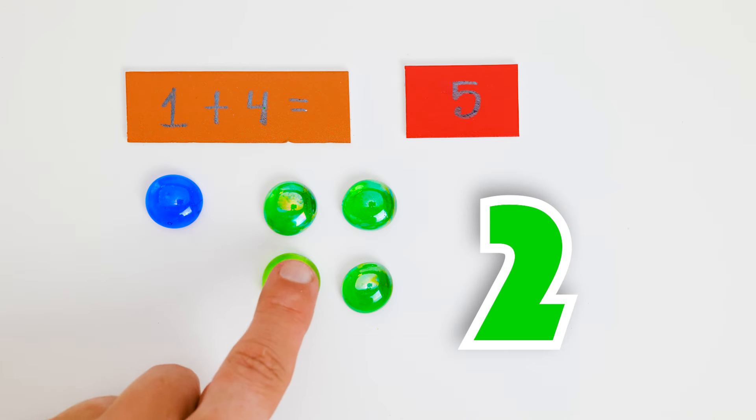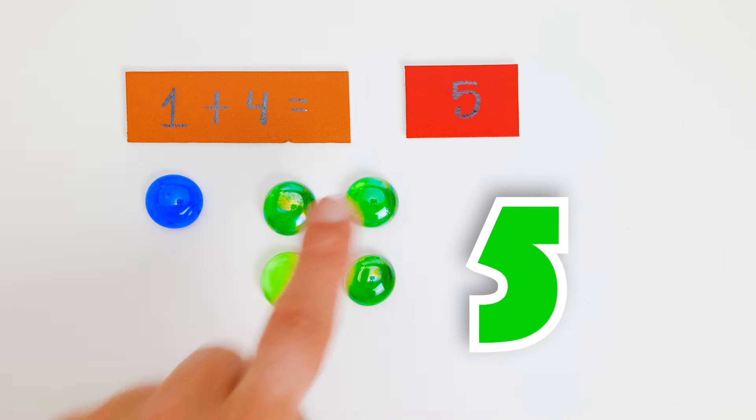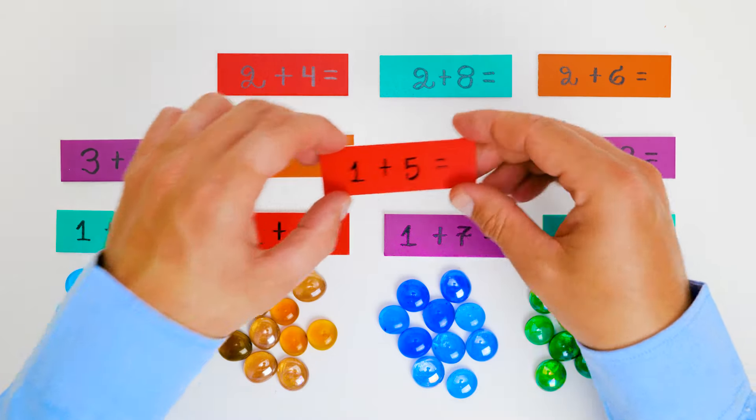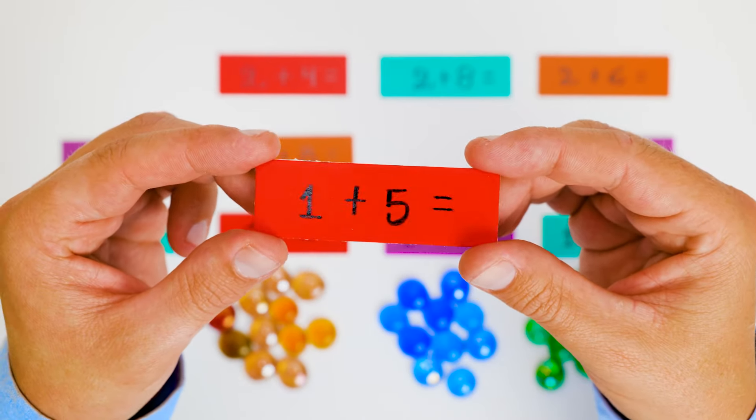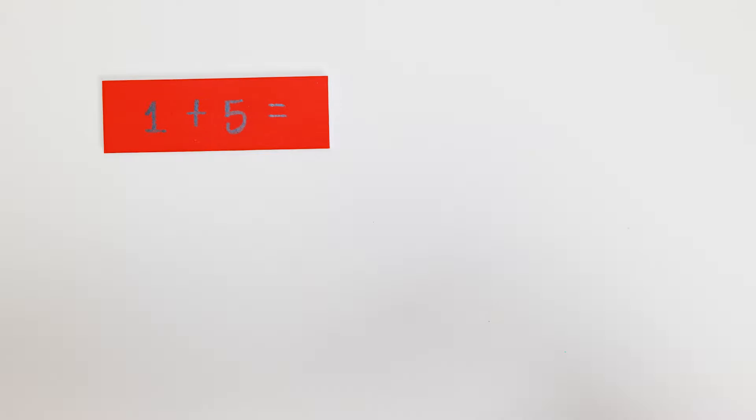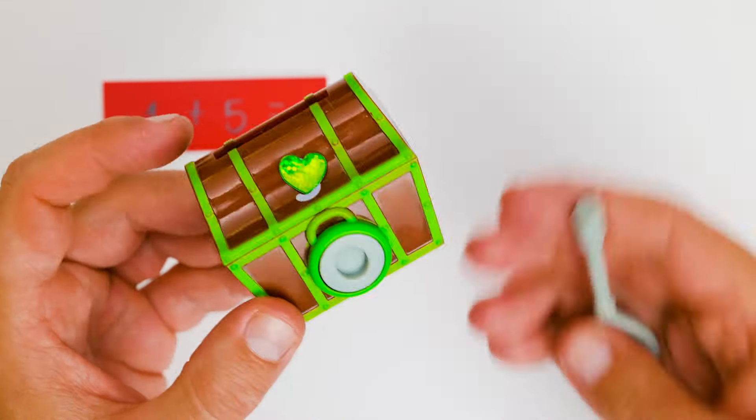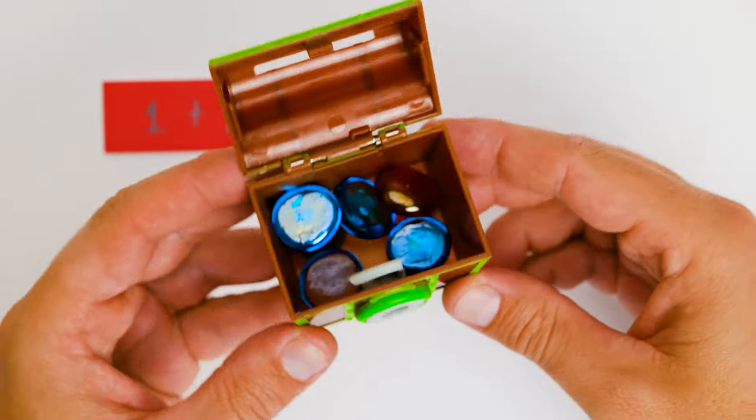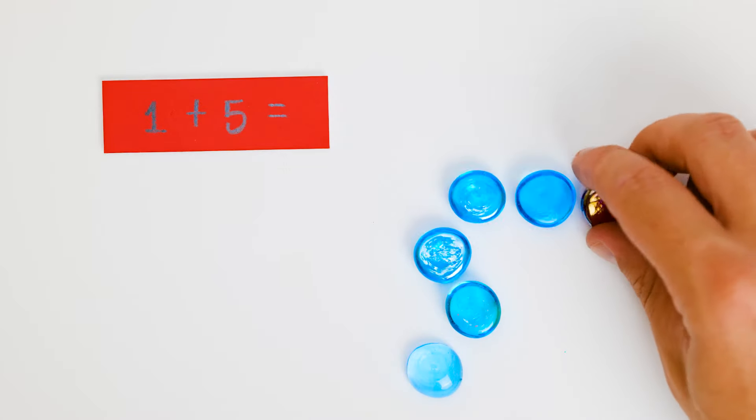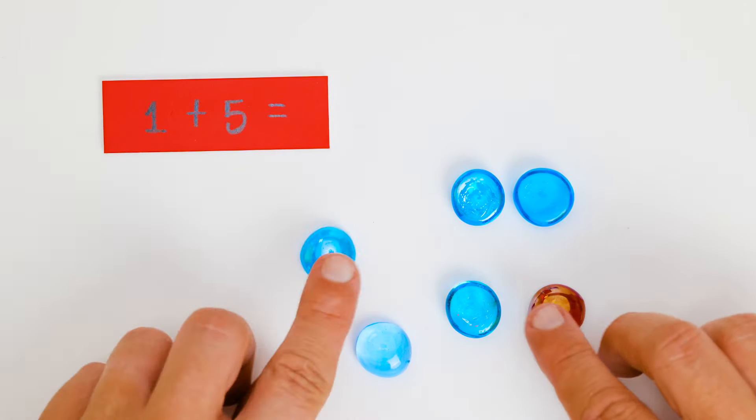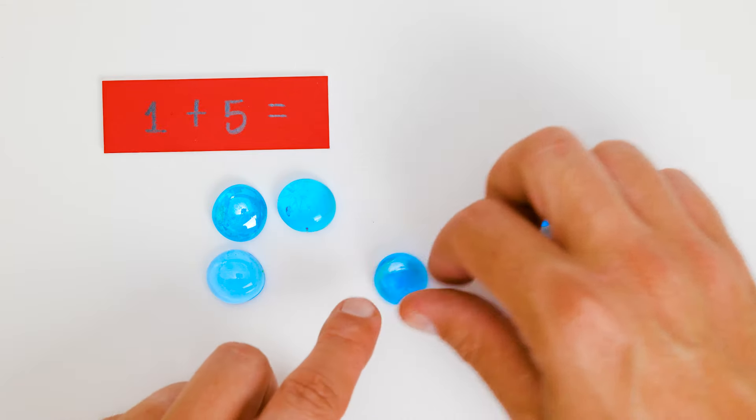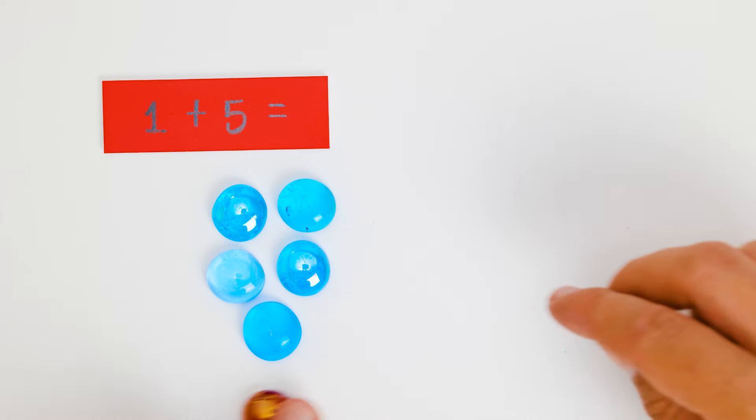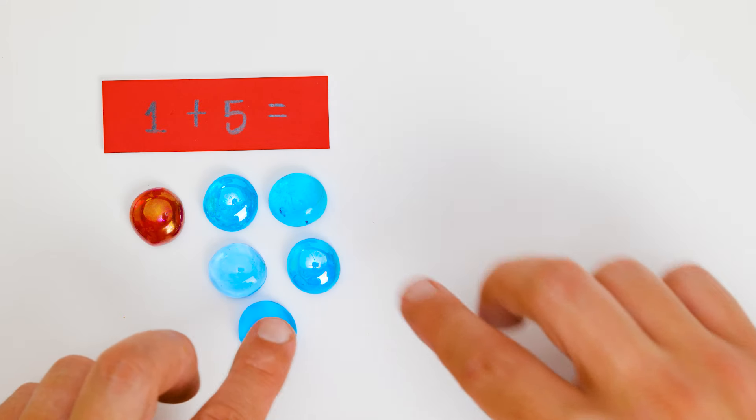That's right. So we have five jewels in total and five is the answer. One, two, three, four, five. Let's try another one. This one says one plus five. I know we can work it out. First, we need some more jewels. Are there some in here? Yippee! More jewels! Let's get started!